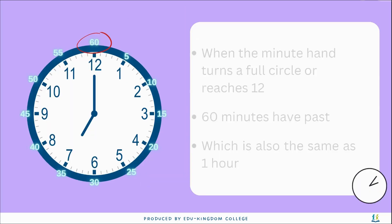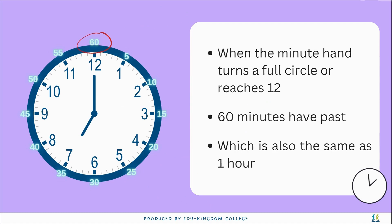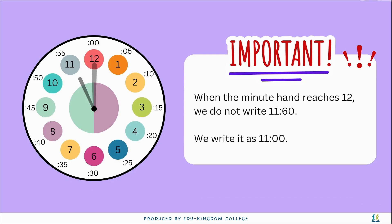When the minute hand turns a full circle or reaches 12, 60 minutes have passed, which is the same as 1 hour. Important to note that when the minute hand reaches 12, since it's a new hour, we do not write 11:60 — we write it as 11 o'clock.